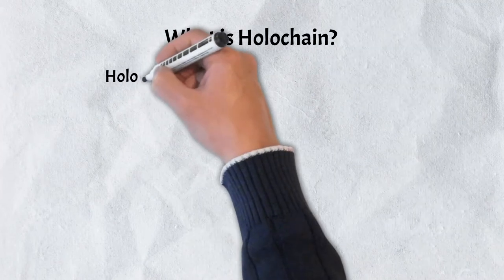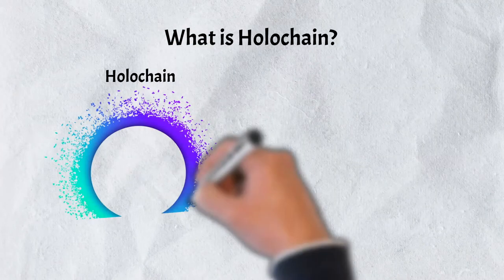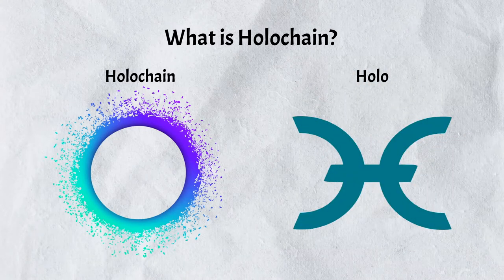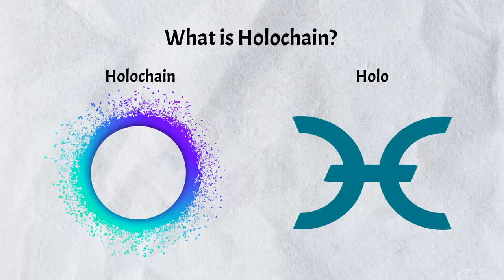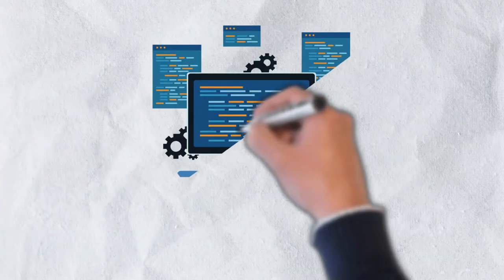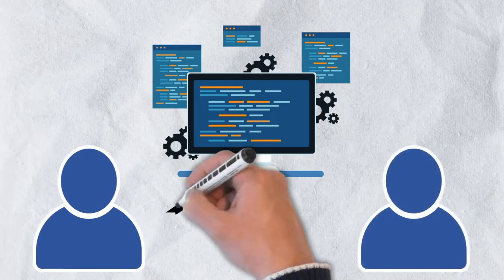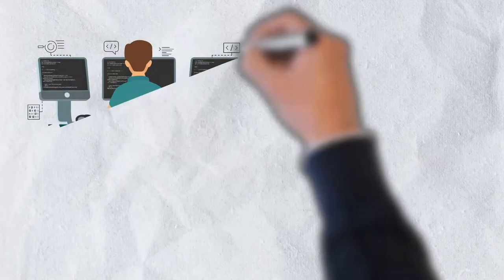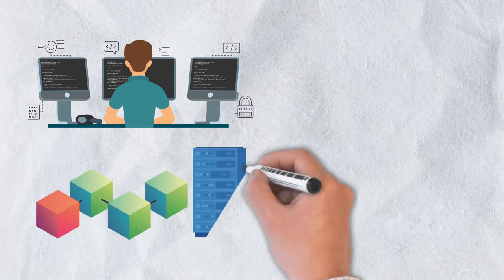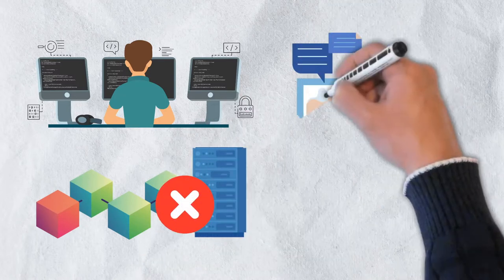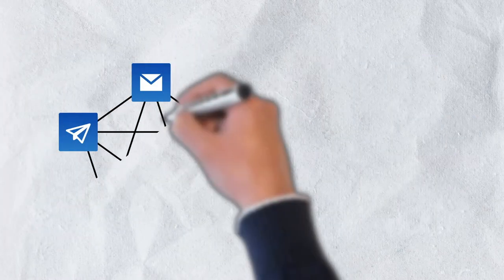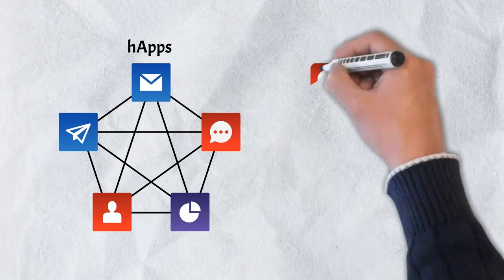One of the first important things to know about Holochain is that it is just one component of a larger network. This network also includes Holo and the Holo token, two topics we'll cover in more detail later. Holochain itself is described as an open-source, end-to-end, peer-to-peer framework that powers decentralized applications. It is a tool for developers that provides the necessary infrastructure and technology to create decentralized applications without the need of a blockchain or centralized server.